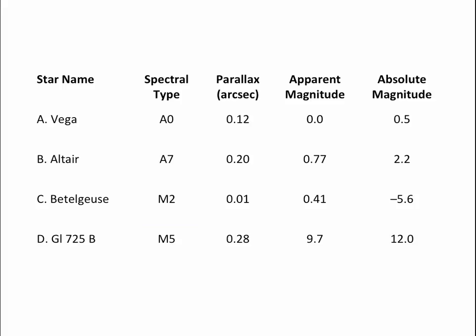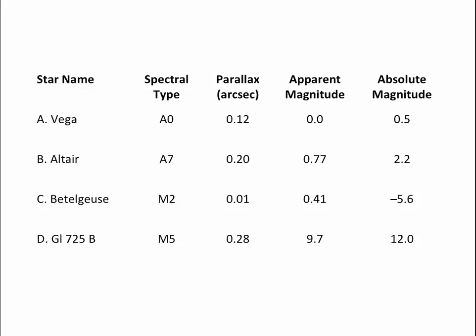Let's see if you remember anything from the first mini-lecture. Which of these stars is closest to the Earth? From mini-lecture one, we can get distance from parallax — the angle a star appears to move. The bigger the angle, the closer the star. Out of all of these, the closest star is star D, GL725B — that's just a catalog name. But you also notice it appears the faintest, and it actually is the faintest of all these stars, which tells you it's intrinsically a very faint star. That completes this mini-lecture on the brightnesses of stars and the magnitude scales. Please complete the mini-lecture review, and we'll see you in mini-lecture 3.